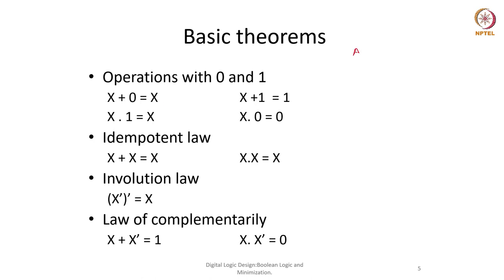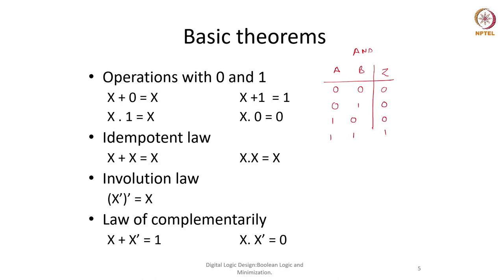This is the truth table of AND. With inputs A and B and output Z: when A=0, B=0, Z=0; when A=0, B=1, Z=0; when A=1, B=0, Z=0; when A=1, B=1, Z=1.